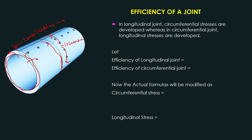The circumferential joint connects many cylinders together to increase the length. If this joint is not very efficient, the cylinders may separate — affecting the length direction. So to summarize: the longitudinal joint develops circumferential stresses, and the circumferential joint develops longitudinal stresses.